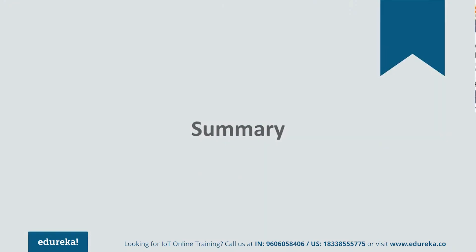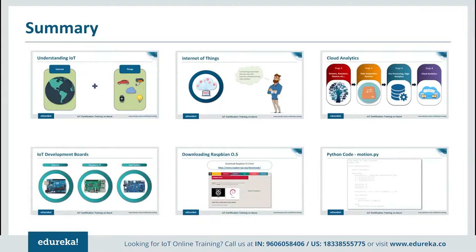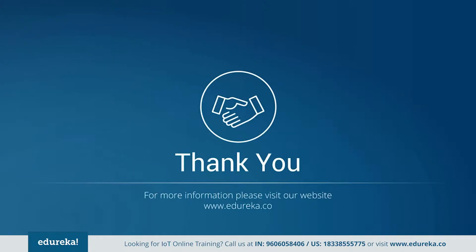This brings us to the end of this video. We started off by understanding what exactly is IoT, then looked at the evolution of the Internet, followed by the IoT architecture, the different IoT development boards, configuring a Raspberry Pi, and understanding the motion.py code to find out if the chair is empty or not. Hoping that you liked the video — thank you.